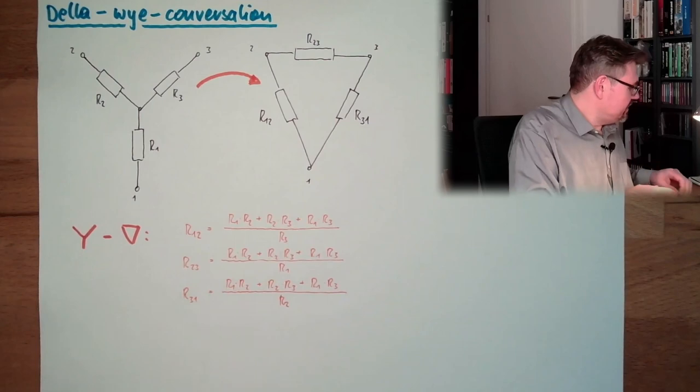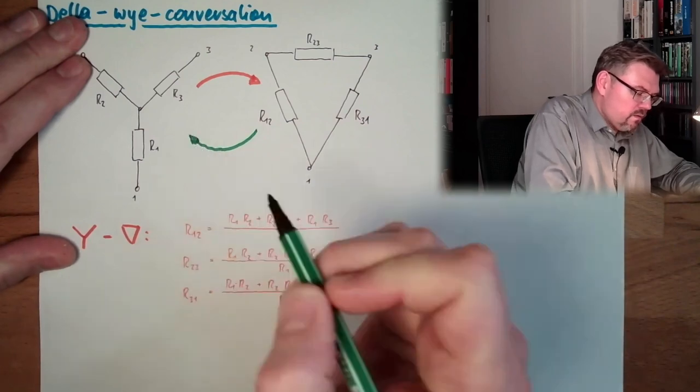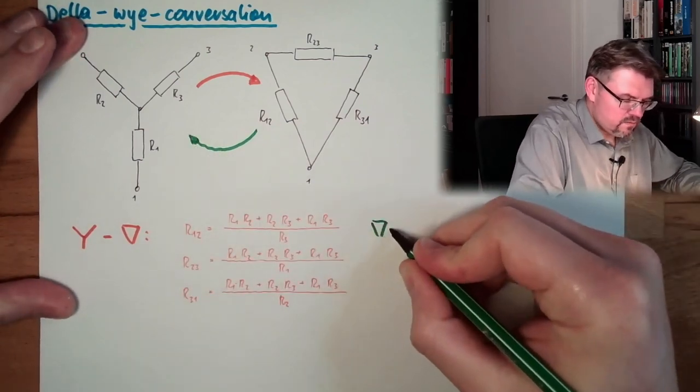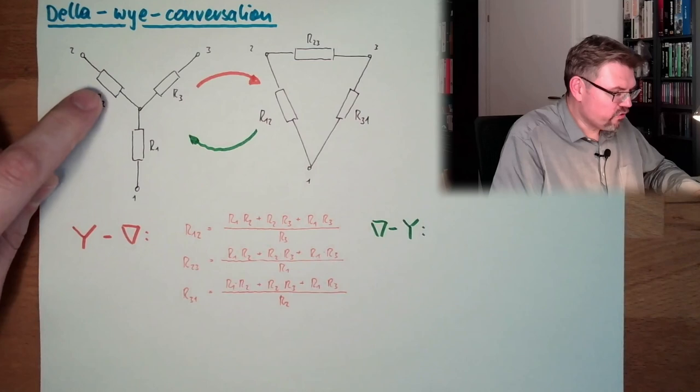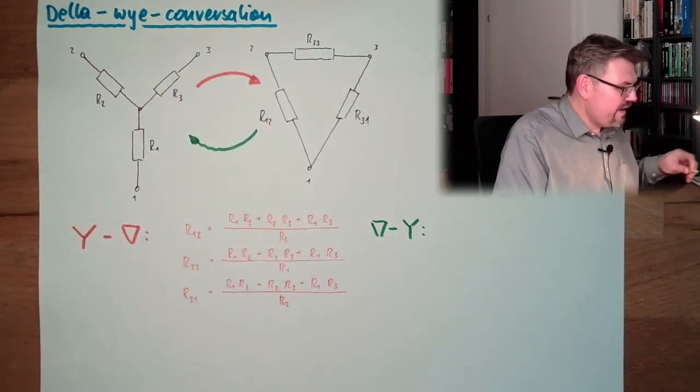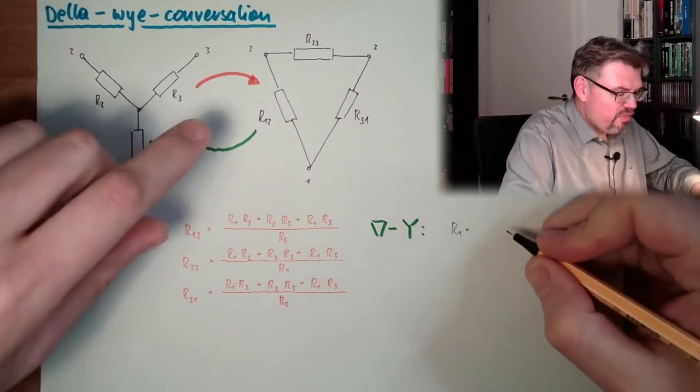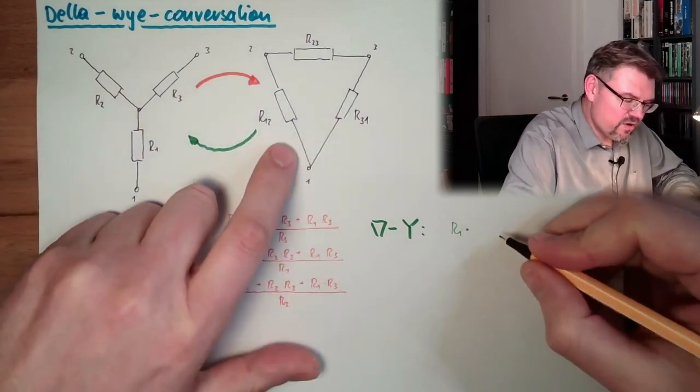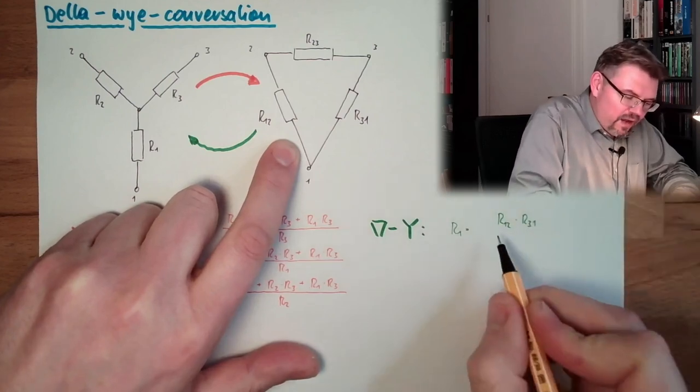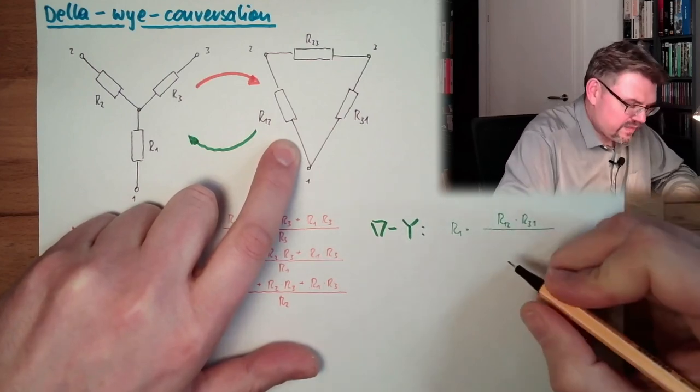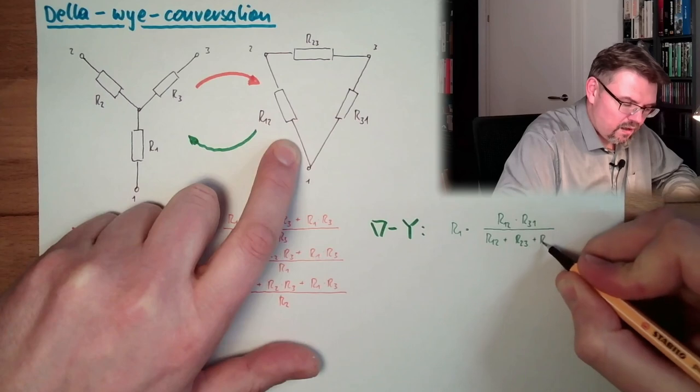Now let's see what is happening the other way around, from delta to Y. We have to calculate those values from these values. And this is working like this: r1 equals, those where 1 is always inside. Here, 1 is inside r12 multiplied by r31, and the bottom part is always the same, the sum of all simply: r12 plus r23 plus r31.